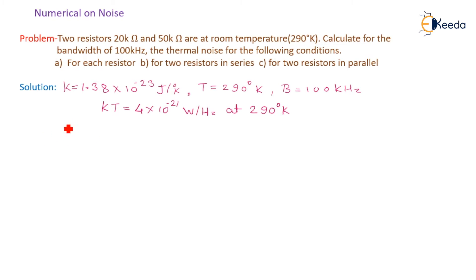Now for each resistor, first case we will consider A. In that A we will try to find the first one for 20 kΩ resistor. For 20 kΩ resistor, the particular noise voltage En² equals 4kTBR. And that after putting the value 4 × 4 × 10^-21 × 100 × 10³ × 20 × 10³, overall the value of this En is calculated as 5.66 microvolts.